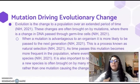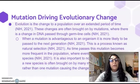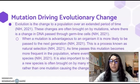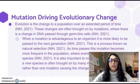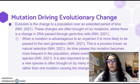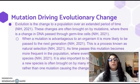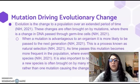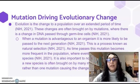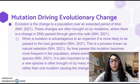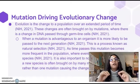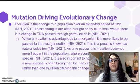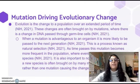Mutation drives evolutionary change. Evolution is a change in a population over an extended period of time, and these changes are often brought on by mutations passed through germline cells. When a mutation is advantageous, it is more likely to be passed on because the organism is more likely to survive and reproduce. Over time, the mutation can become more frequent in a population and may eventually lead to a new species. This type of change is typically caused not by a single mutation, but by a variety of mutations that accumulate together.